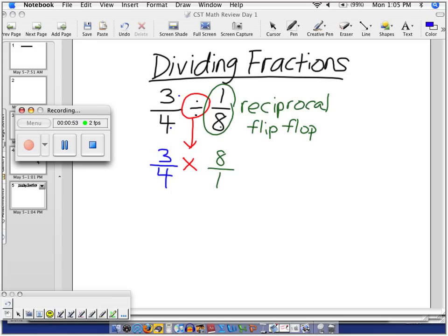All righty. And then, because it's a multiplication problem, you do exactly what we were doing before. Evaluate the top times top is 24, and when you evaluate the bottom, you get 1 times 4.